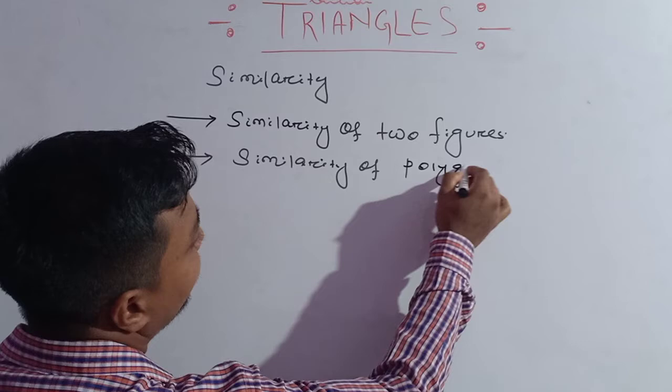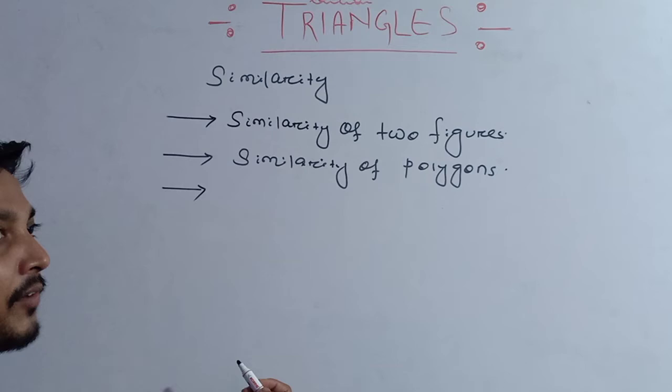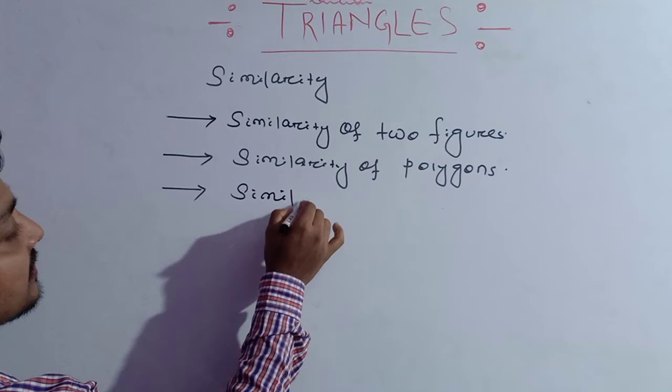A triangle is also a polygon. So after the discussion of similarity of polygons, we will do the discussion of similarity of triangles.